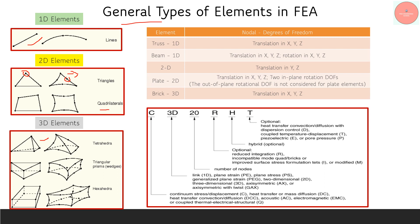In 3D elements, all three dimensions are considered. We have tetrahedral elements, triangular prism elements, and hexahedral elements. These are the main element types generally used for structural studies, and these elements will have nodes as mentioned.